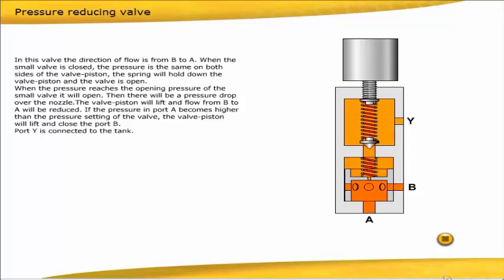If the pressure in port A becomes higher than the pressure setting of the valve, the valve piston will lift and close the port B.